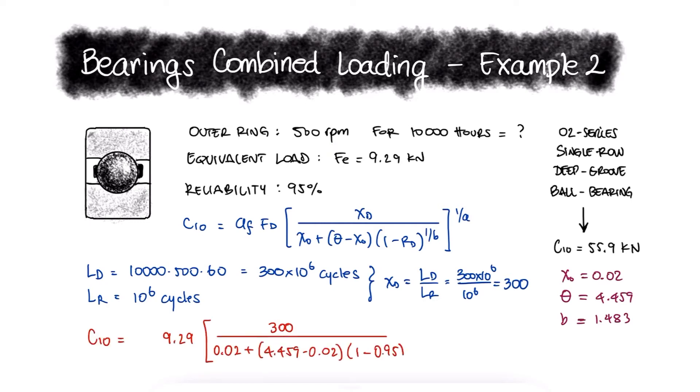We can substitute all the variables, use 3 for A since it's a ball bearing, and a common application factor of 1.2 to find that an appropriate load rating C10 should be 73.5kN or higher.